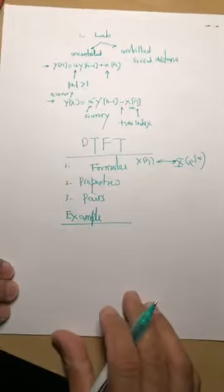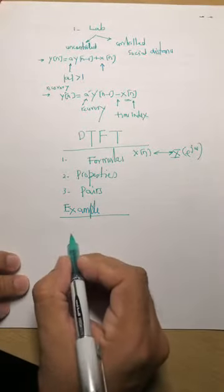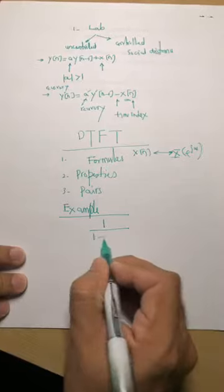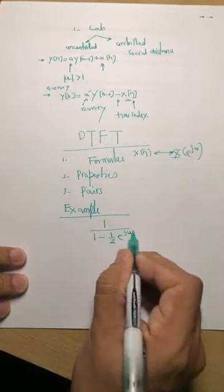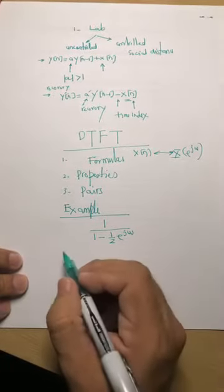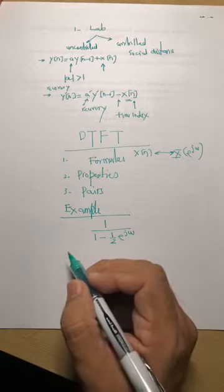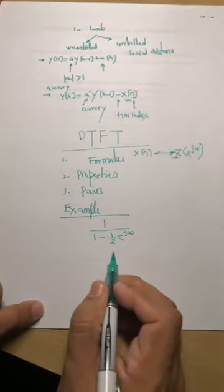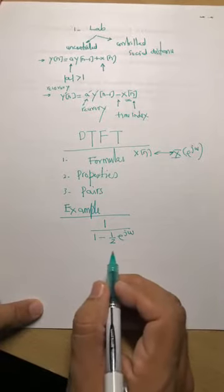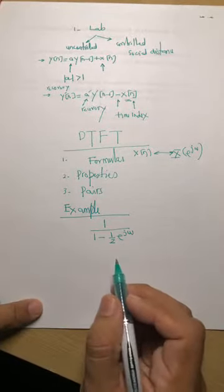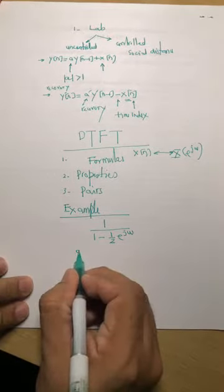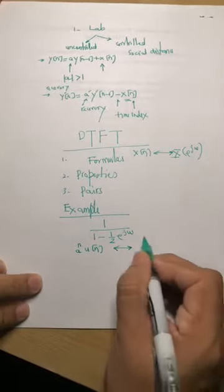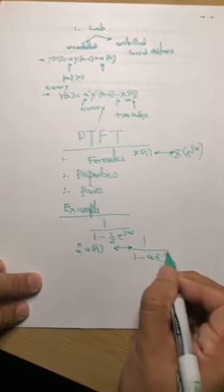Let's solve a few examples to show how to apply these properties. Example one: find the inverse Fourier transform of 1 / (1 - 0.5*e^(jω)). You need to remember a formula and a relevant property. The most important formula is: a^n * u[n] ↔ 1 / (1 - a*e^(-jω)), provided |a| < 1.